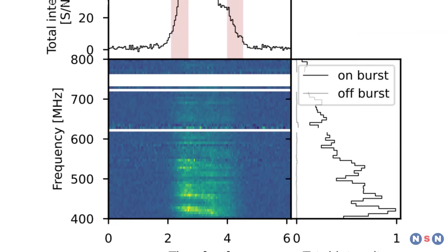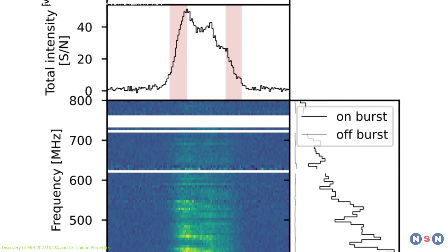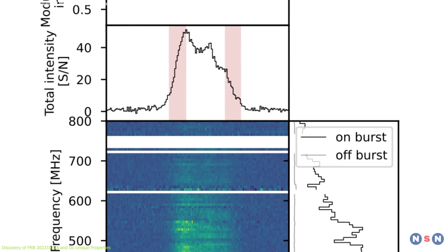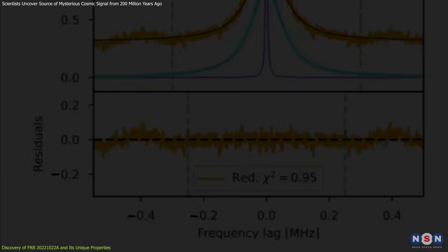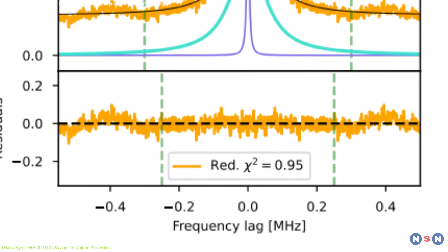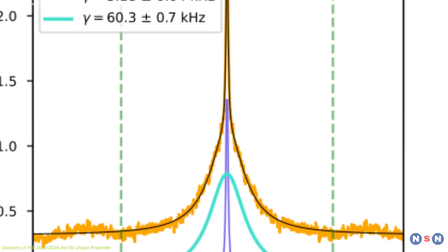In 2022, astronomers detected a particularly intriguing FRB, labeled FRB 20221022A. It lasted just 2 milliseconds, but in that brief moment, it emitted more energy than the Sun produces in days.